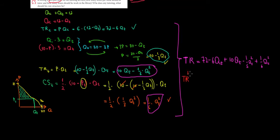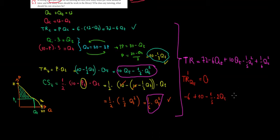We maximize total revenue with respect to QT by setting the derivative equal to zero. Differentiating: the derivative of 72 is 0; derivative of -6·QT is -6; derivative of 10·QT is +10; derivative of -(1/3)·QT² is -(2/3)·QT; derivative of (1/6)·QT² is (1/3)·QT. Setting the whole expression equal to zero: -6 + 10 - (2/3)·QT + (1/3)·QT = 0.